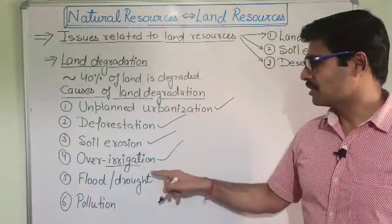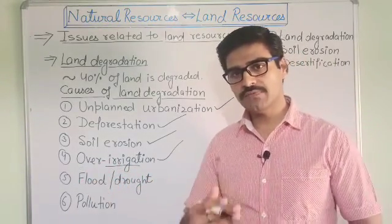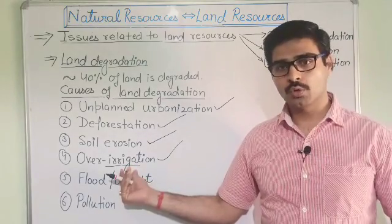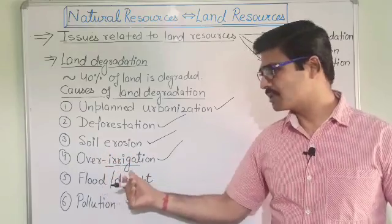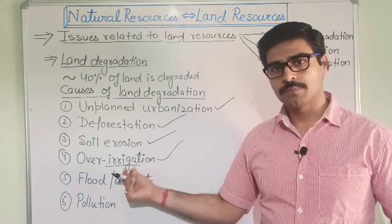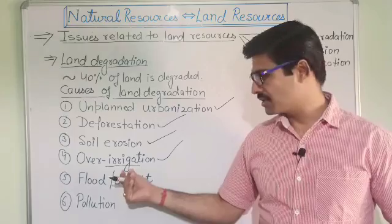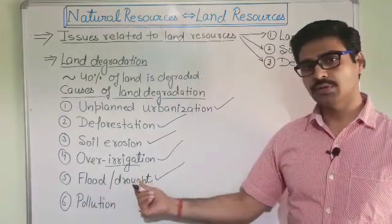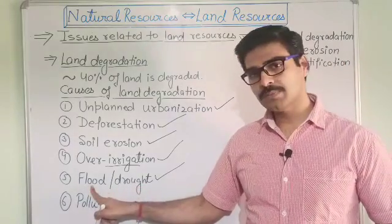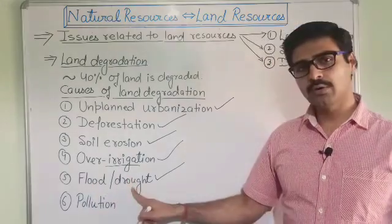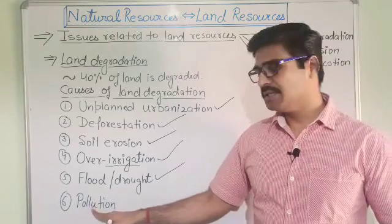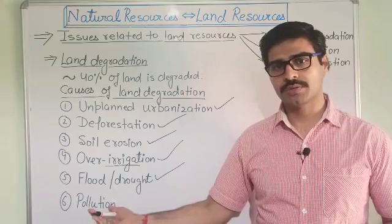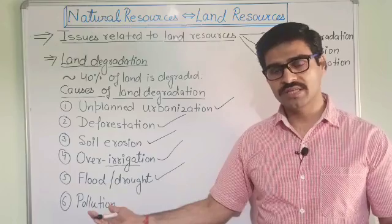Next is over irrigation. Over irrigation means if we frequently irrigate a piece of land again and again, and due to this over irrigation there is accumulation of salts in that soil. That high salt concentration would affect the productivity of the crop. Next is natural disasters, specifically floods and drought — both are responsible for degradation of land. Flood is responsible for soil erosion and loss of the top fertile layer, while drought is responsible for desertification. The last factor is environmental pollution: soil pollution, water pollution, adding of pesticides, and solid waste on land — all these are factors responsible for land degradation.